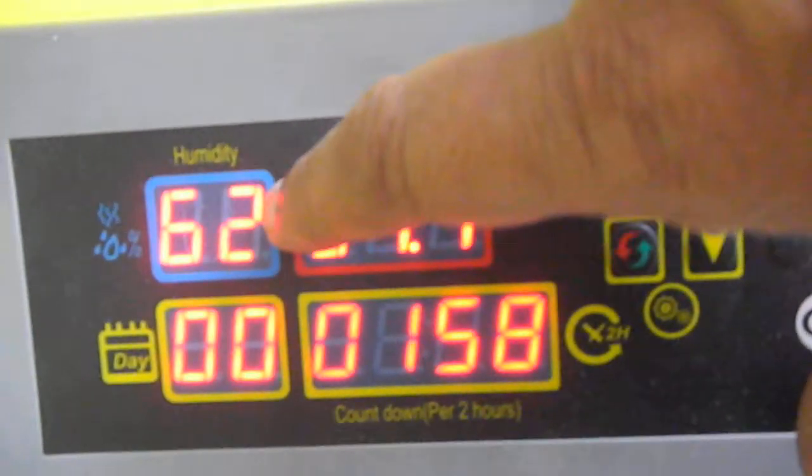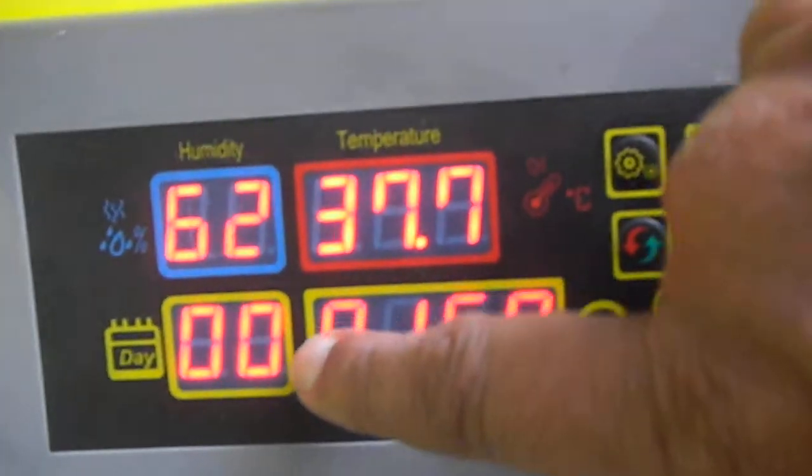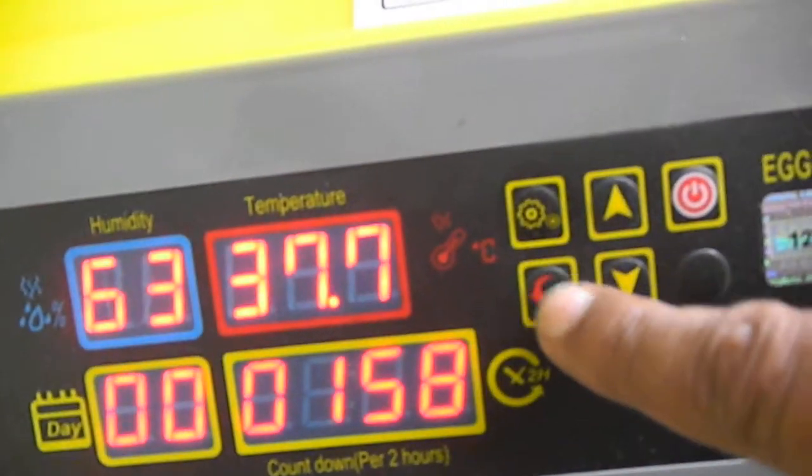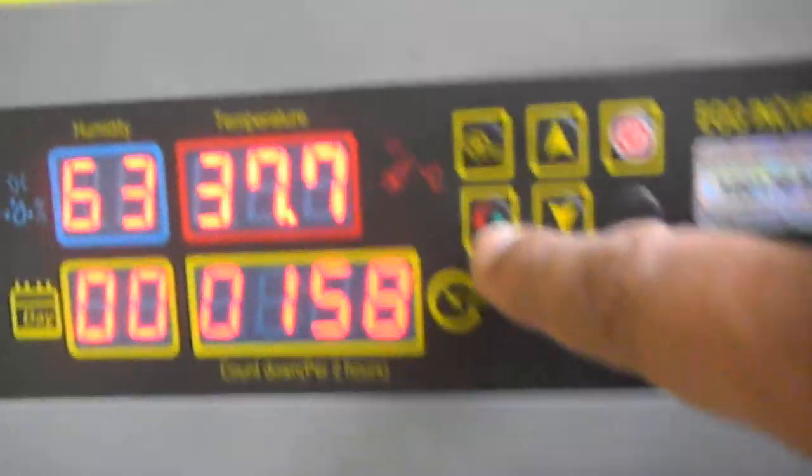This shows the humidity inside, the number of days, and how much time it has already run. It has a reset button here, and this indicator checks whether the tray is moving.